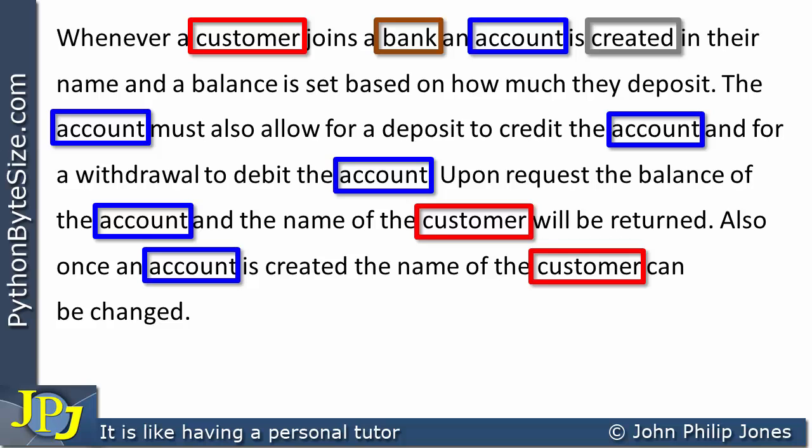Carrying on, I come to 'created', which is really a verb — a doing word — and it appears twice. Then I come on to 'name', which is going to be the name of the customer, and it appears twice more. Now, if I think about 'name' — it certainly isn't a verb, it's not a doing word. This is a noun, so it is likely to become a variable in my class. In fact, it's going to become a data attribute, a data field.